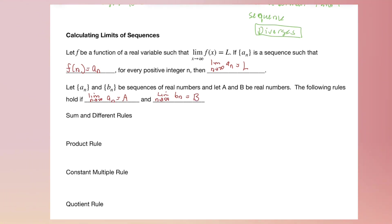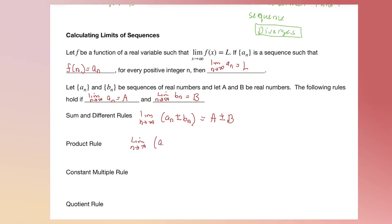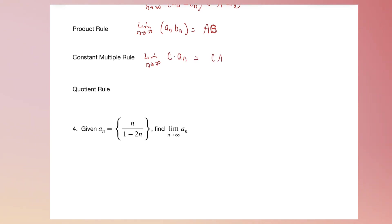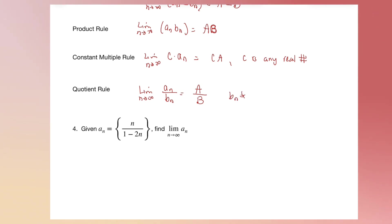There are properties we can use with limits of sequences. The limit of a sum or difference of two sequences equals the sum or difference of their individual limits — we can distribute the limit to each term. For a product, we multiply the results together to get A times B. If we multiply a limit of a sequence by a constant c, we can factor the constant out: the result is c times A, for any real number c. For a quotient, the limit of A sub n divided by B sub n equals A divided by B, provided B sub n and B are not zero.